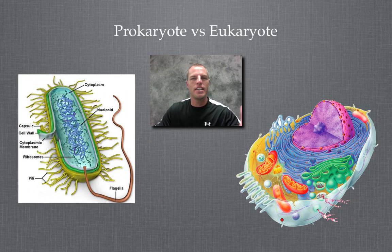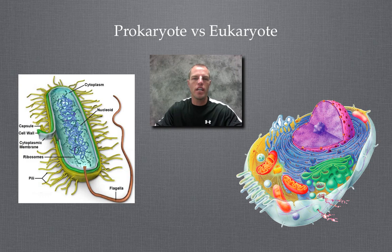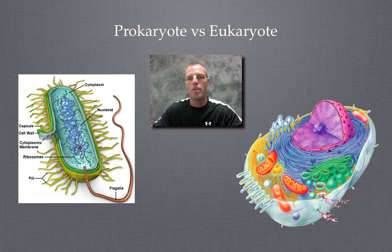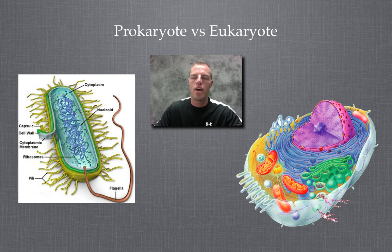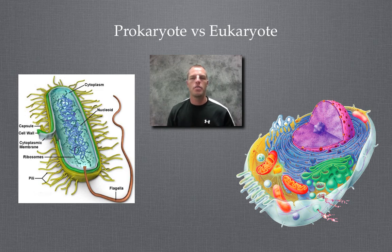The biggest difference between prokaryote and eukaryote — if you look at these two here, on the left we have a prokaryote. You'll notice the DNA right here. That DNA molecule is not housed inside of a nucleus or a nuclear membrane. If we look over here on the right, in this animal cell we have our nucleus. Our genetic material is surrounded by a nuclear membrane which is protecting it. The biggest difference is eukaryotes have a nuclear membrane; prokaryotes don't.